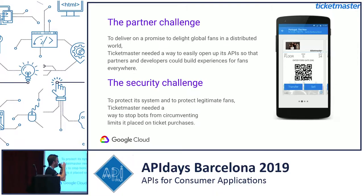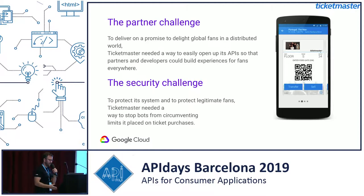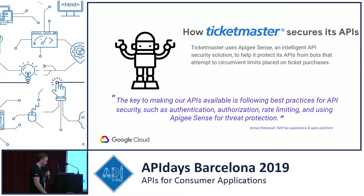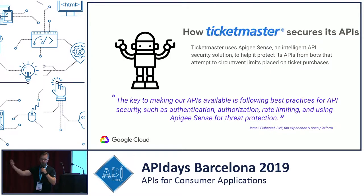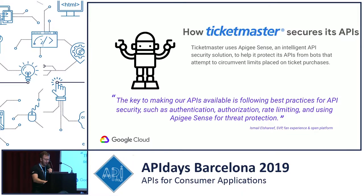The biggest challenge was security. We've all heard about automated systems buying tickets and then reselling them at higher prices. When you open a platform to partners, security challenges multiply. Ticketmaster used Apigee Sense to create a way to prevent bad bots from buying tickets through their APIs, so both partners and their own application can deliver a great experience to fans without bad bots automatically purchasing tickets.